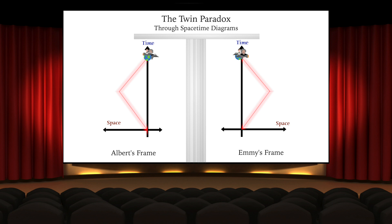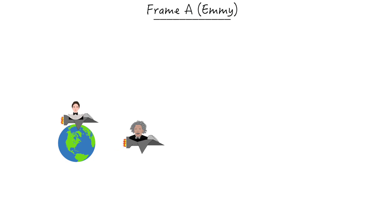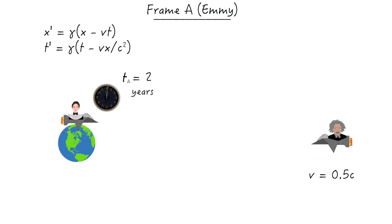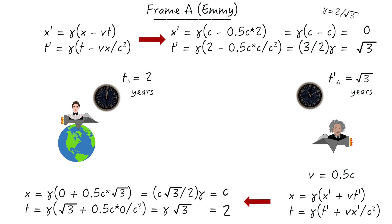However, for those of our more skeptical viewers, we're going to briefly show where the math breaks down. Albert blasts off at half the speed of light away from Emmy. After two years on her clock, she sees him turn around and can calculate via the Lorentz transformations what his coordinates should read. After doing the calculations, she'll get that his clock coordinate at the turnaround reads the square root of three years, and that his space coordinate reads zero. Albert can use the backwards transformations to see what her coordinates for this measurement read, and he'll confirm they'll read two years and one light year distance away.